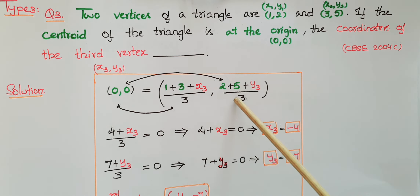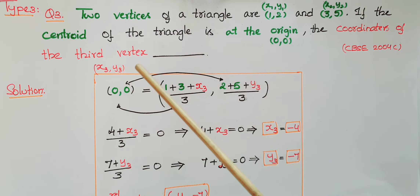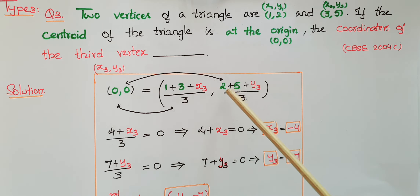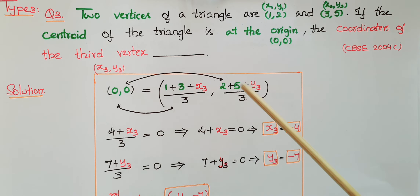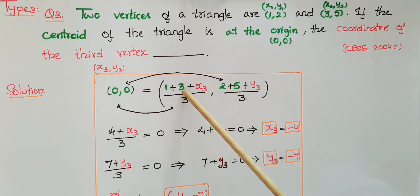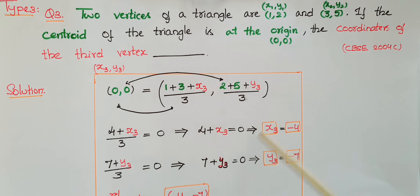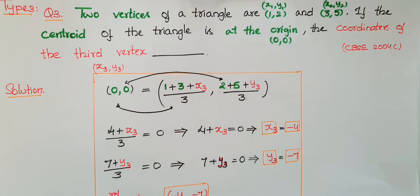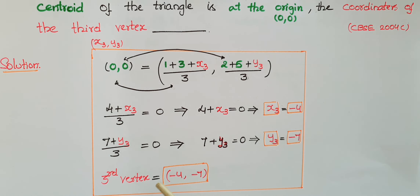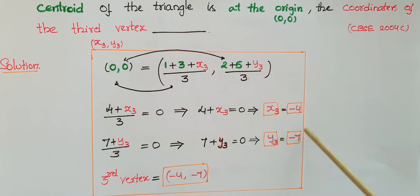Centroid = ((1 + 3 + x3) / 3, (2 + 5 + y3) / 3) = (0, 0). Equating x-coordinates: (4 + x3) / 3 = 0, so 4 + x3 = 0, giving x3 = -4. Similarly equating y-coordinates: (7 + y3) / 3 = 0, giving y3 = -7. Therefore the third vertex coordinates are (-4, -7).